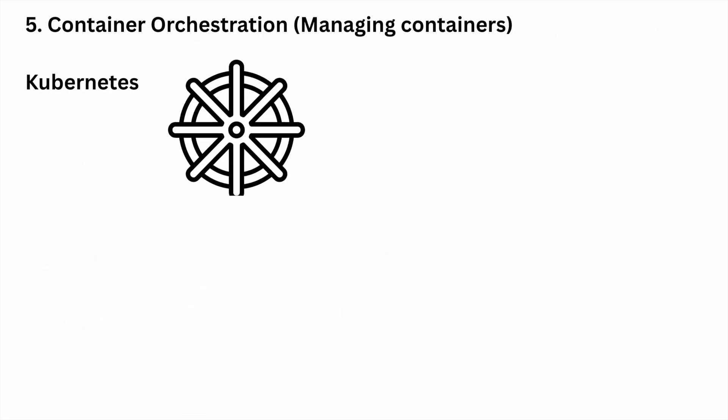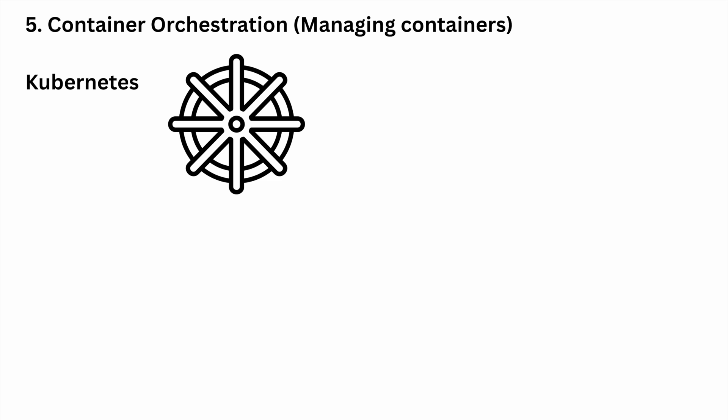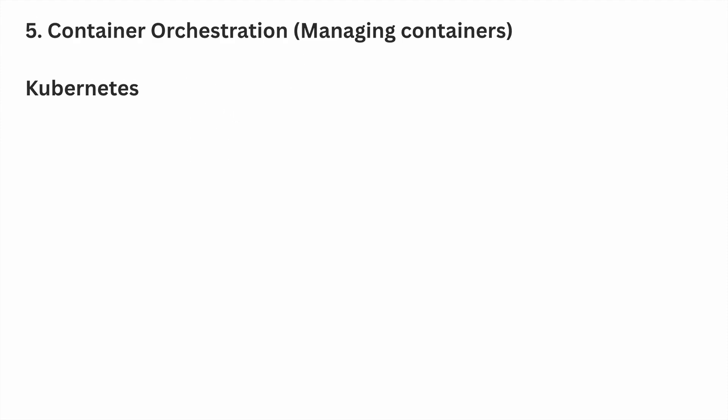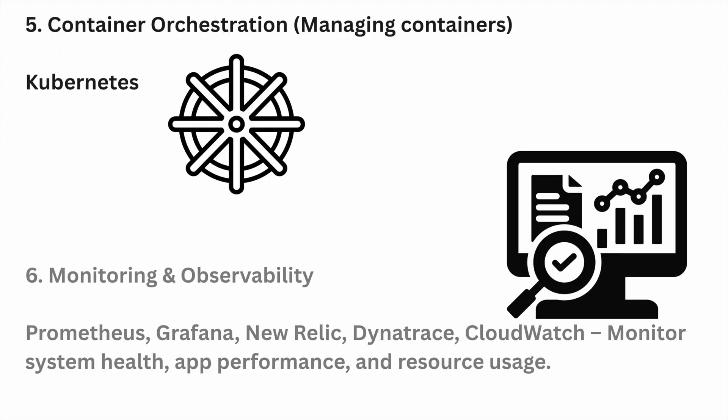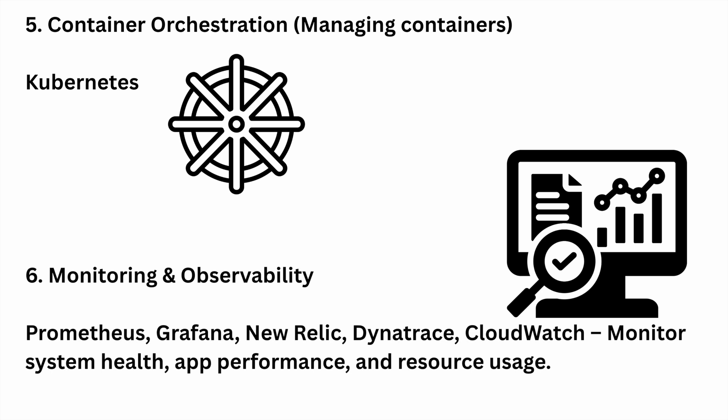Next is container orchestration. These tools are used to automate the deployment, scaling, and management of containers — for example Kubernetes. And the next one is monitoring and observability. These tools are used to monitor system health, application performance, and resource usage — for example Prometheus, Grafana, and Dynatrace.